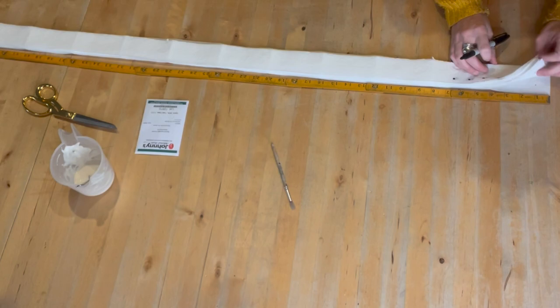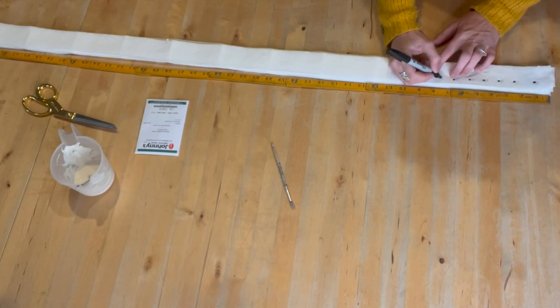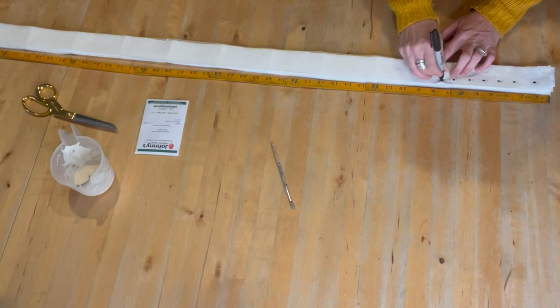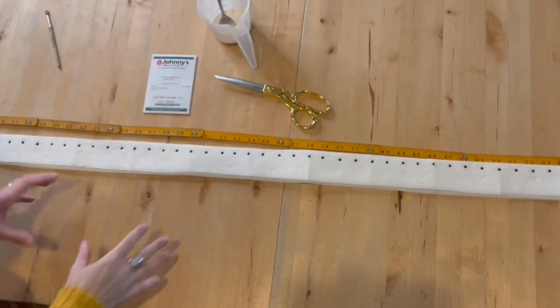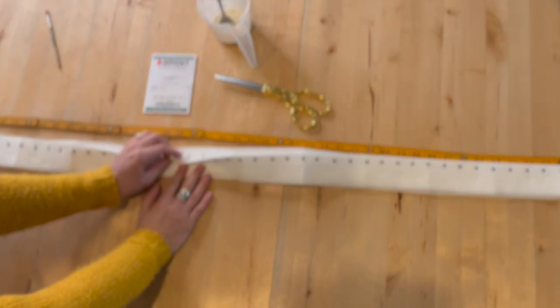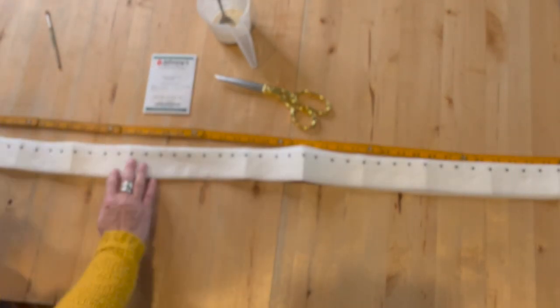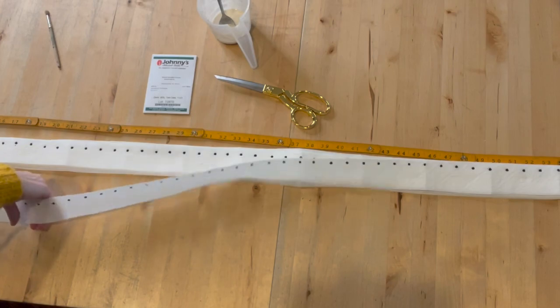At least giving us a hint of where we want our last one. So once we have everything marked, and like I said I love using Sharpie, and I'll show you how we apply the glue and then apply the carrot seeds.